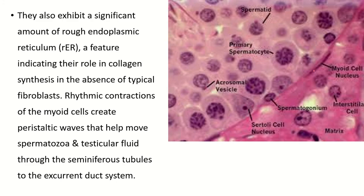The myoid cells also contain a large amount of rough endoplasmic reticulum, which enables them to produce collagen fibers. The tunica propria layer lacks fibroblasts, so it is the myoid cells that produce collagen fiber.